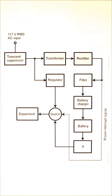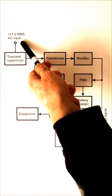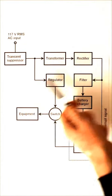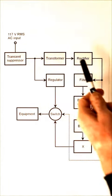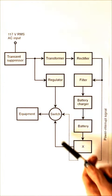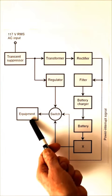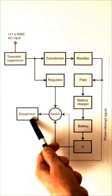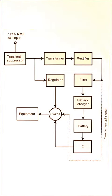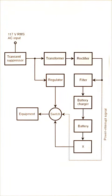What this does is it takes the 117 volt root mean square voltage from your house, electricity from your house, and it processes it in such a way so that the equipment, usually a personal computer, will receive the proper power and electricity even if there's a momentary power failure.